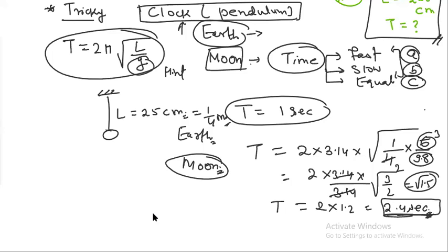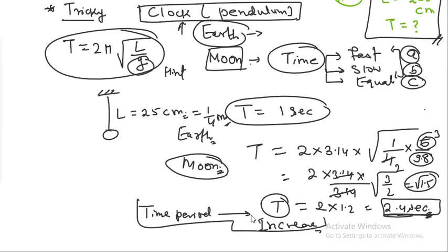Now tell us how the time period. What happened? What is the time period? It increased, right? So what happened? Time period increased, so what happened? Slow or fast?